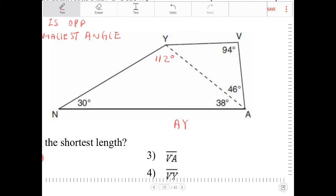So within triangle NAY, I know the shortest length is going to be AY. Let's take a look at triangle AVY. I'm given 94 and 46. The angle that's supplementary to those two angles is going to be 40 degrees, because 46 plus 94 is 140. So the last remaining angle must be 40 degrees.